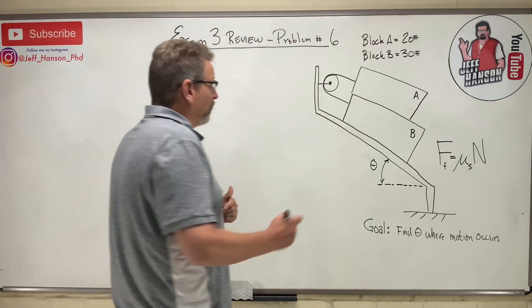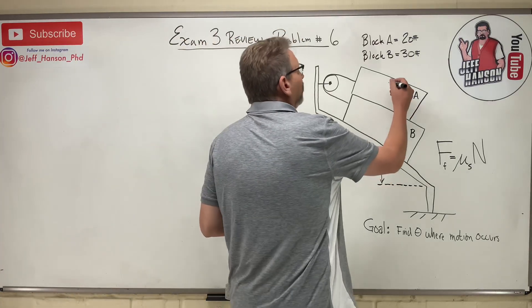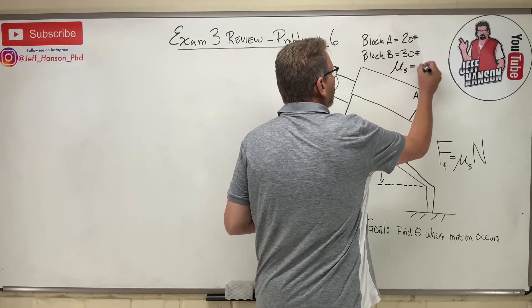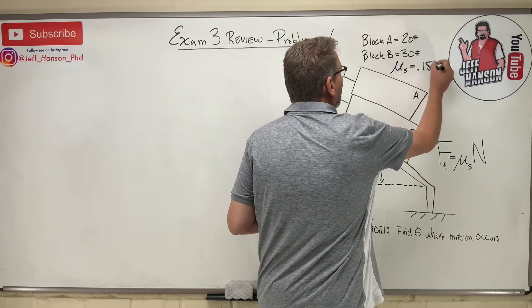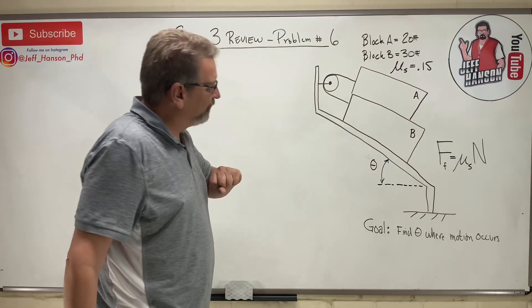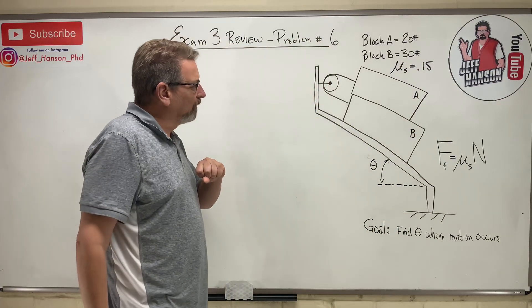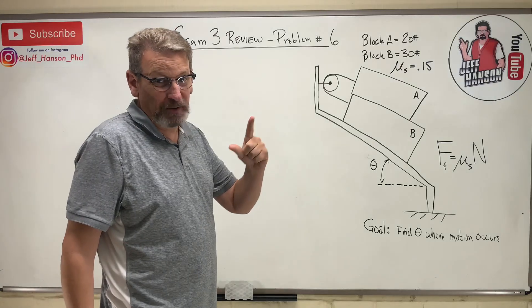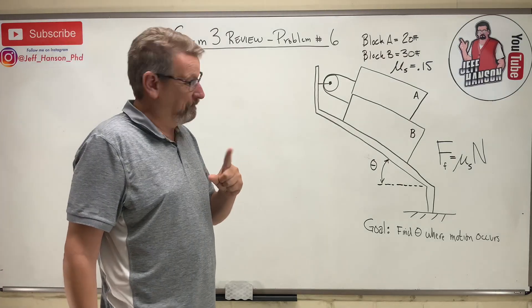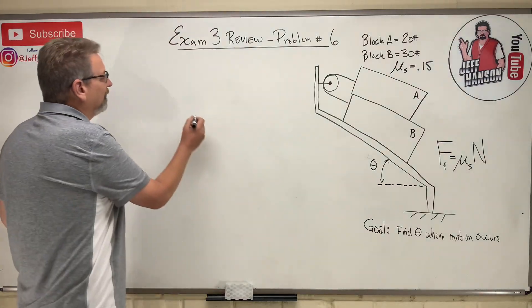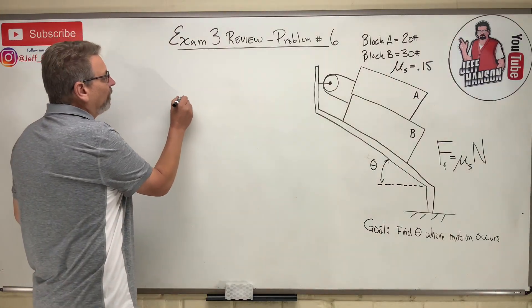We do know that the friction coefficient everywhere is 0.15, so let's put that up here: mu sub s equals 0.15. The next thing to do on these problems is just draw a free body diagram of the piece parts that we have.